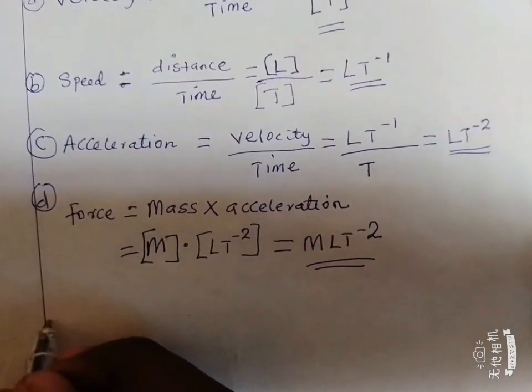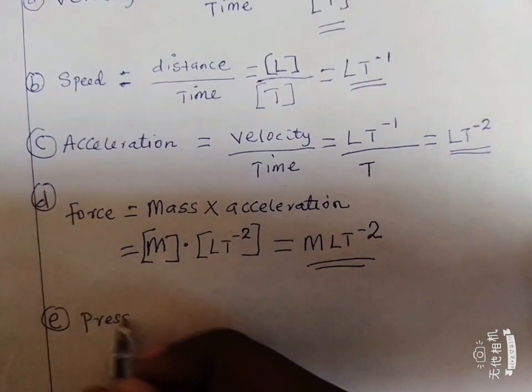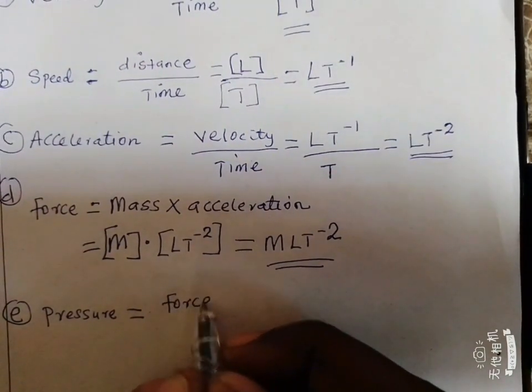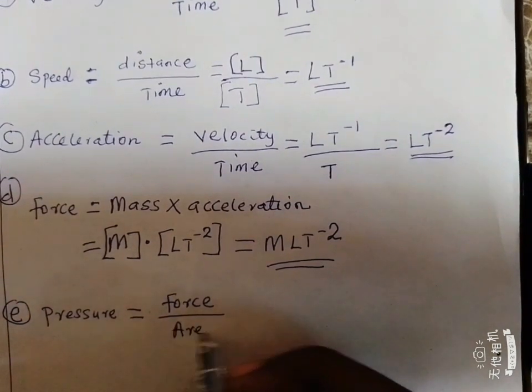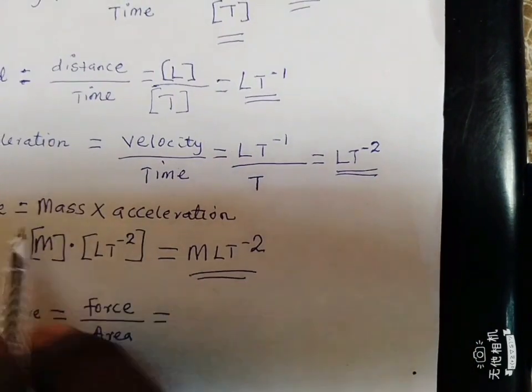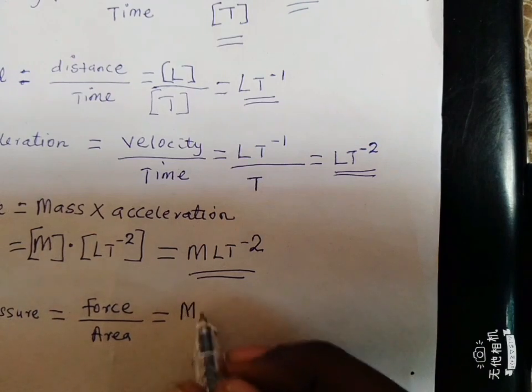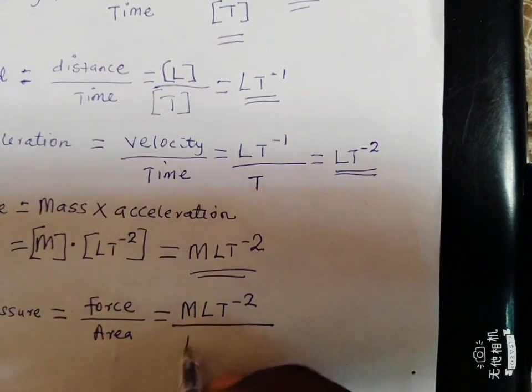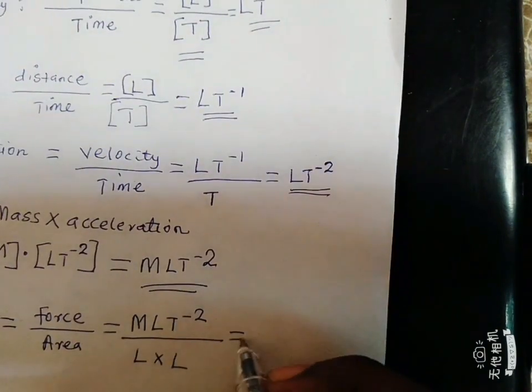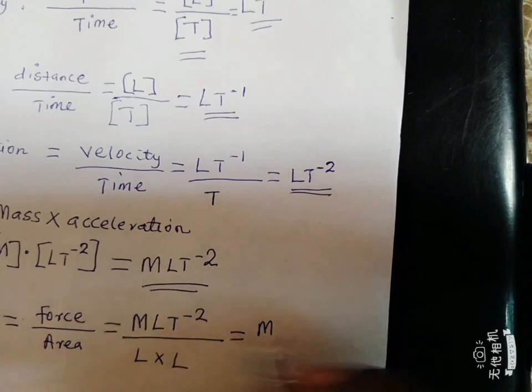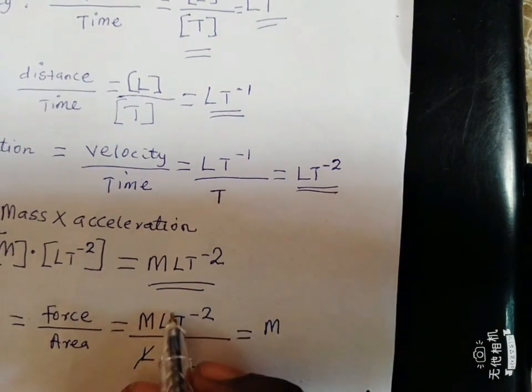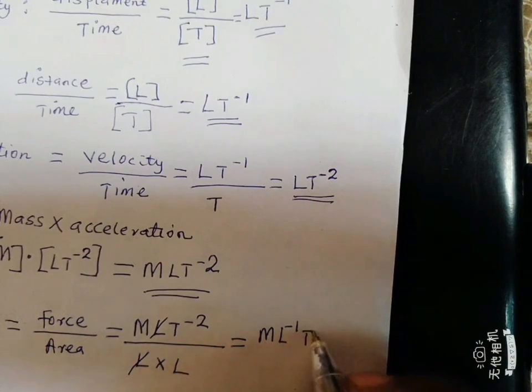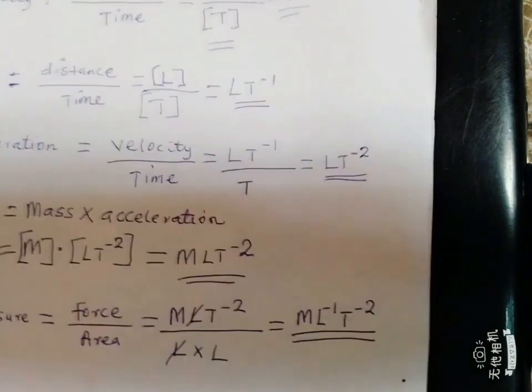Now let's go to the last one, the E part of it, pressure. Pressure mathematically can be defined as force per unit area, force over area. And we know that our force, the dimension for force is M L T raised to the power negative 2. Then divided by area, which is L times L. This L cancels this L. So it might be this one that comes up, M L negative 1 T raised to power negative 2.